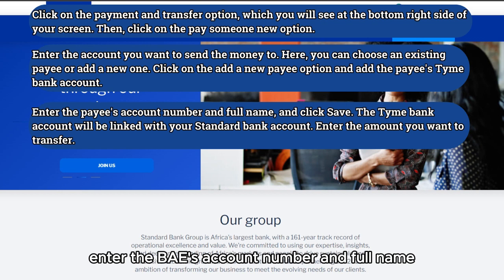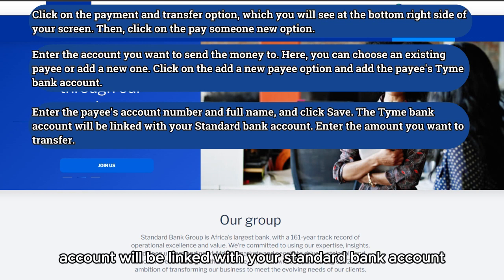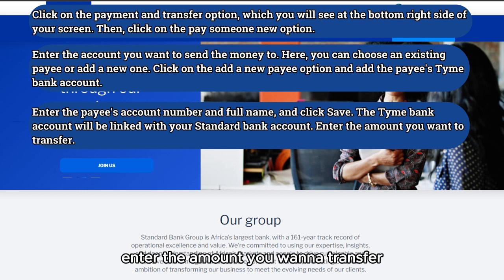Enter the payee's account number and full name and click Save. The TymeBank account will be linked with your Standard Bank account. Then enter the amount you want to transfer.